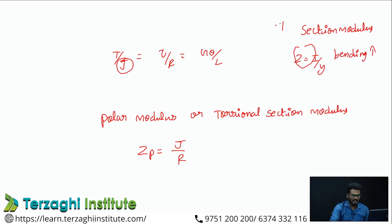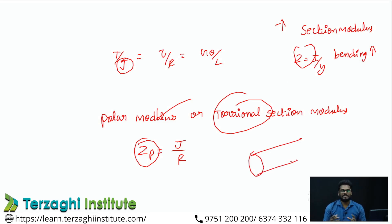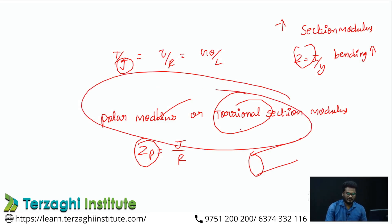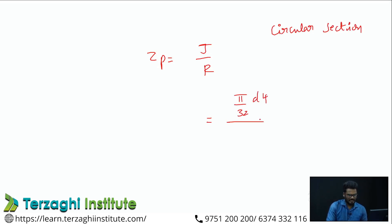The section modulus applies to beams; the polar modulus applies to shafts. A shaft carrying a heavy load in a truck resists torsion more easily when its polar modulus is increased. For a circular section: Zp = (πd⁴/32) / (d/2) = πd³/16.